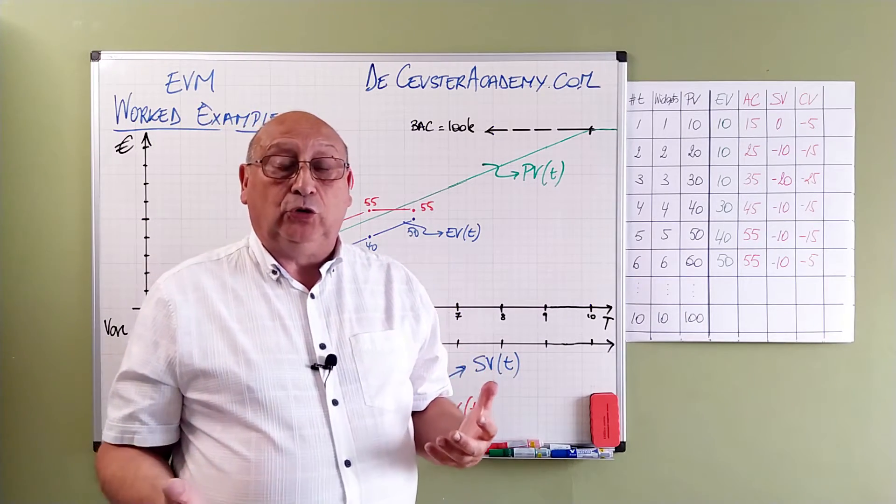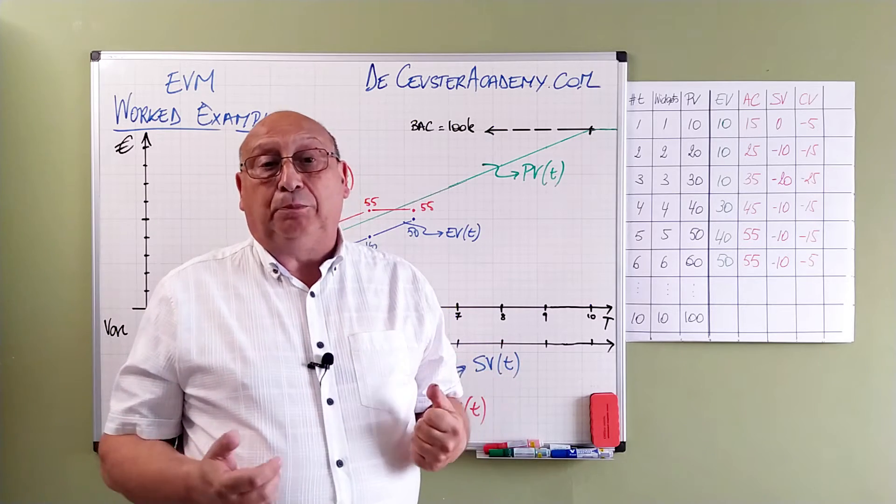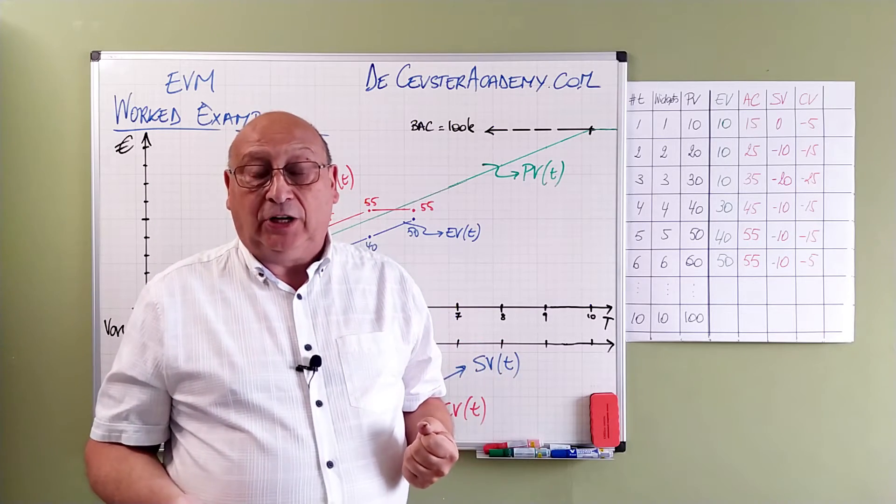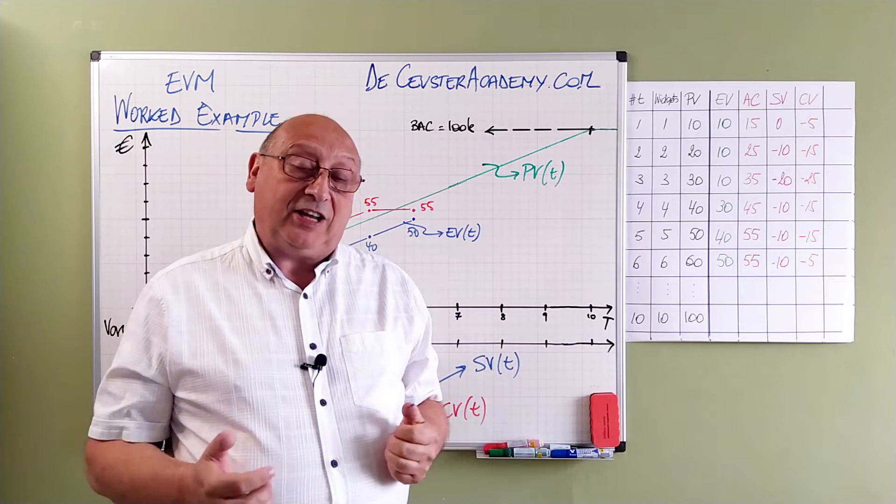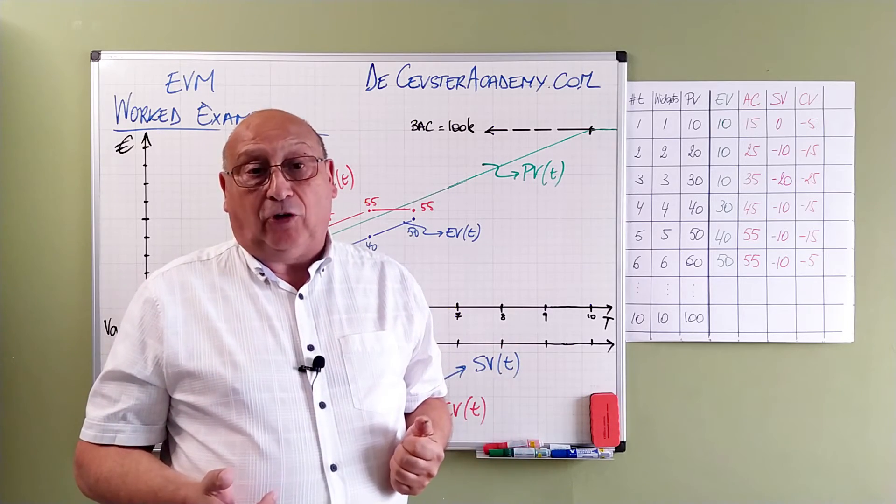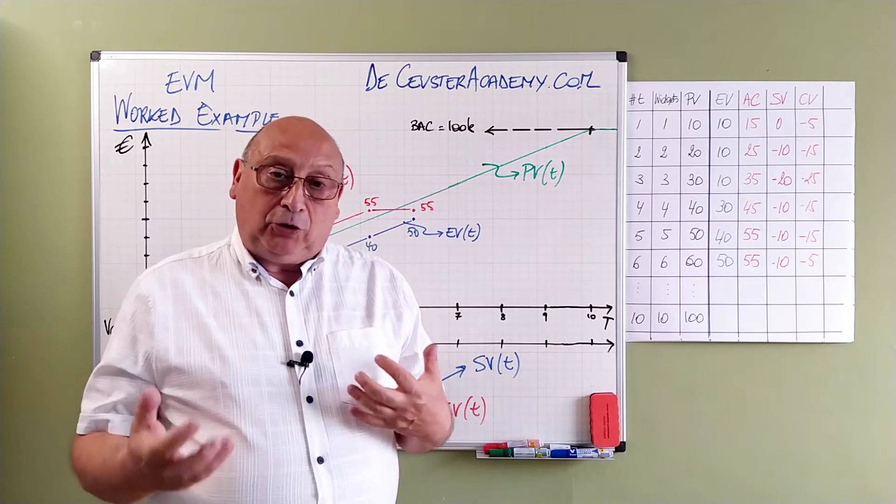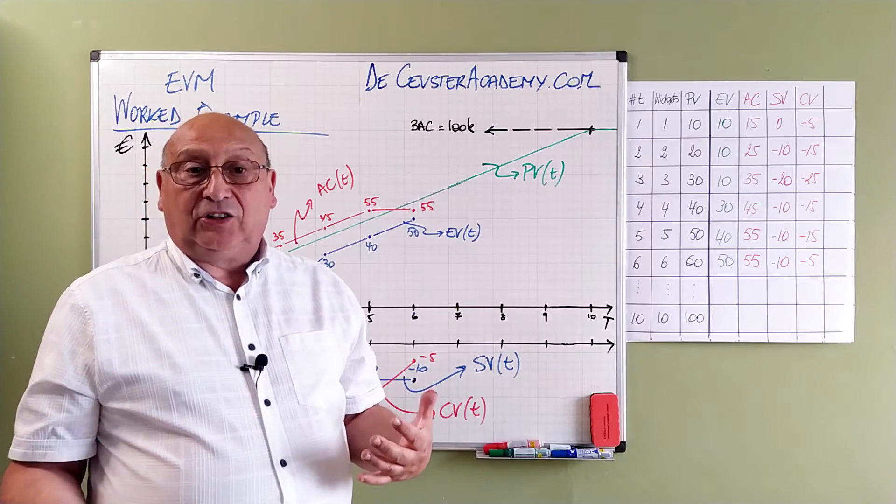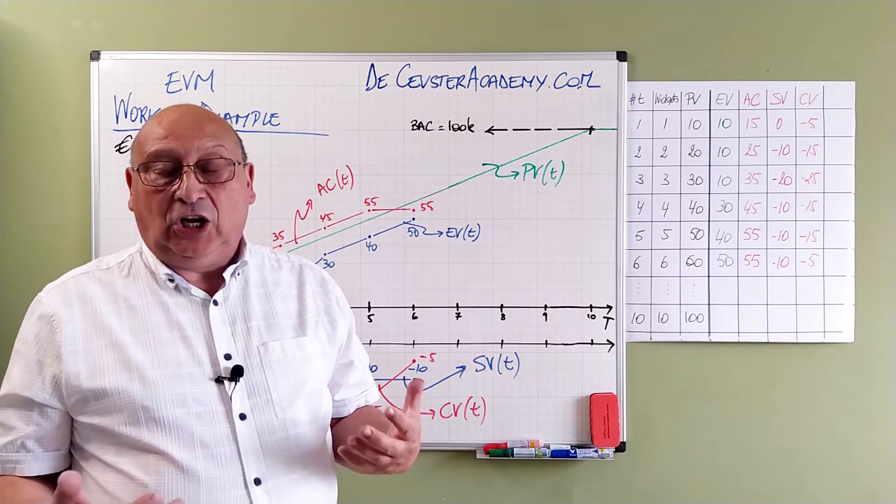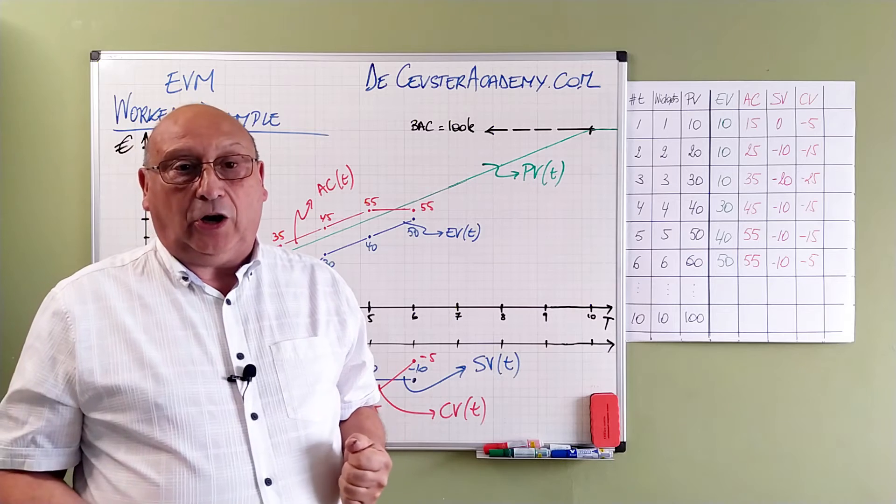We have a nice view on what is the performance of our project. Our schedule performance is bad. We are behind schedule. Our cost performance is also bad. We are over budget. But we have a visual on what is happening. This simple graph shows us exactly what's happening with our project.